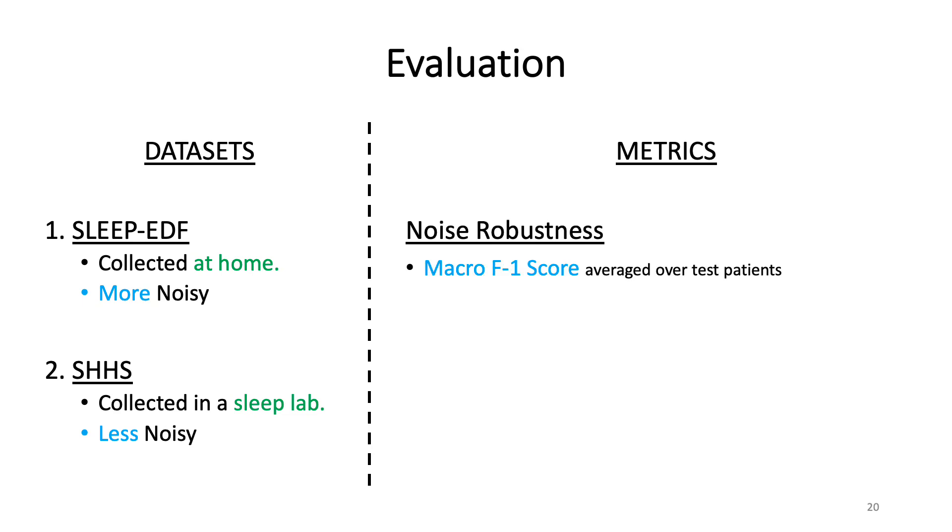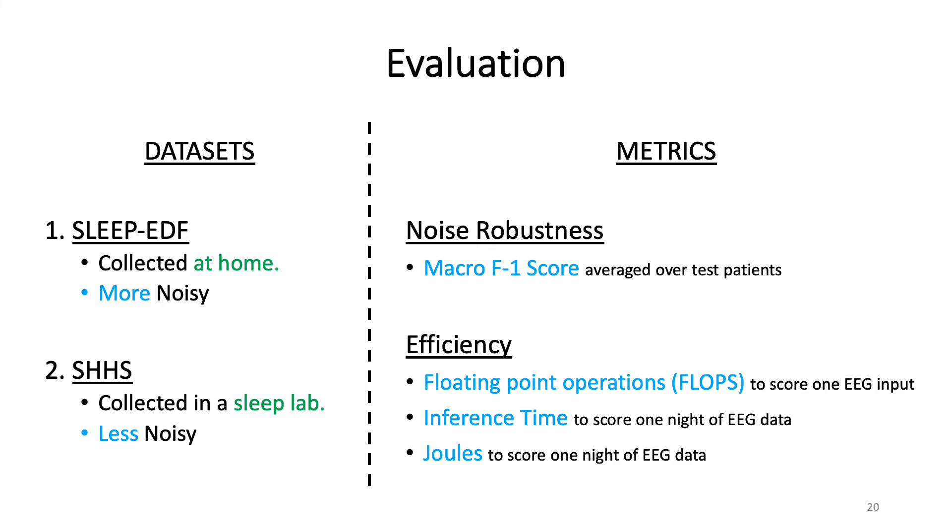In terms of metrics, we evaluate all the methods for noise robustness using the macro F1 score averaged over test patients. For efficiency, we calculate the floating point operations or FLOPs to score one EEG input. For inference time, we also calculate the inference time to score one night of EEG data. Also, we calculate the number of joules to score one night of EEG data. And these last two measurements were performed by actually deploying the neural network on a Pixel 2 smartphone.